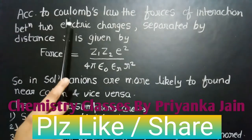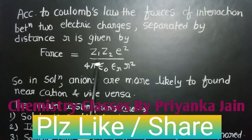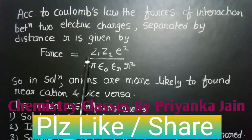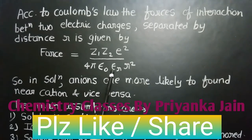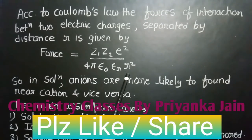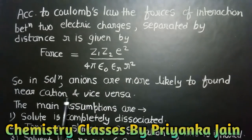When two different charges are separated by a distance r, according to Coulomb's law, there acts a force between them given by: F equals Z1 times Z2 times E squared divided by 4π ε₀ εᵣ r², where Z1 and Z2 are the charges of the two ions, E is the electronic charge, εᵣ is the dielectric constant of the solvent, and r is the distance between the two ions. So in solutions, anions are more likely to be found near cations and vice versa.